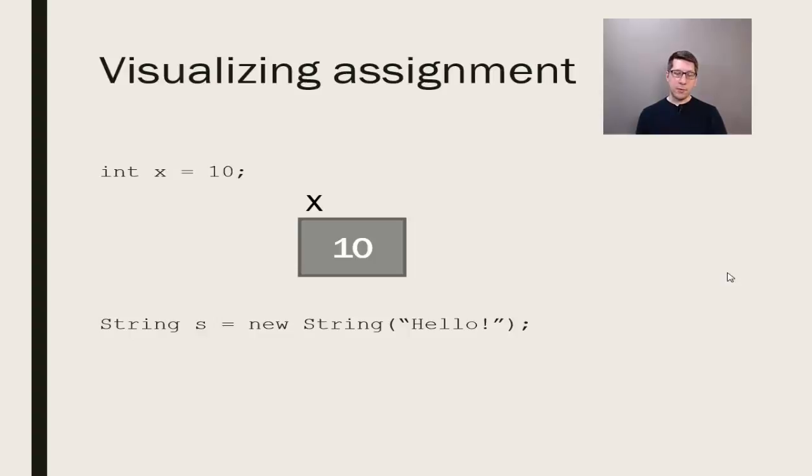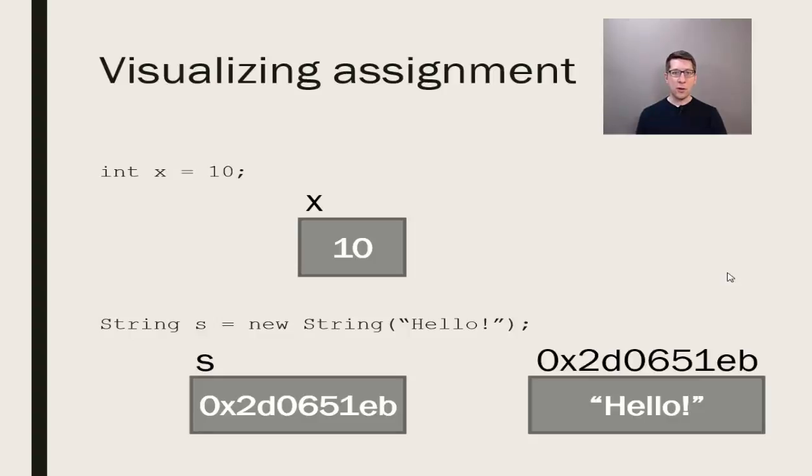With an object type, like a string, we actually are not storing the text into memory. We're storing an address that then points to a location in memory. In this case, a complicated hexadecimal string like you see there.